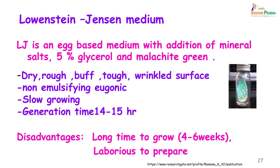LJ medium is an egg-based medium to which mineral salts, 5 percent glycerol and malachite green have been added. The glycerol is hygroscopic and therefore prevents drying of the medium. Malachite green is a selective agent and inhibits bacteria other than mycobacteria. The egg and mineral salts provide nutrition for the growth of the organism. At the end of 4 to 6 weeks you will see dry, rough, buff, tough colonies with a wrinkled surface. They are non-emulsifying, grow very slowly, have a generation time of 14 to 15 hours, and take 4 to 6 weeks to grow. The medium is laborious to prepare, but the advantage is that we can see good growth and identify the organism.